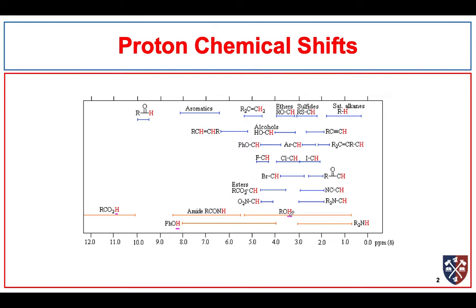Because we're doing a lot of carbonyl problems, we're going to be interested in compounds that have carbonyls. Protons that are on the alpha carbon — that is, the carbon next to a carbonyl group — typically come somewhere between about 2 and maybe as far out as 2.8 or 2.9 ppm.